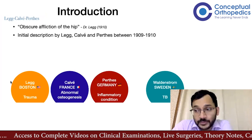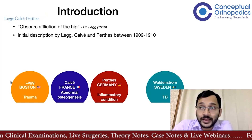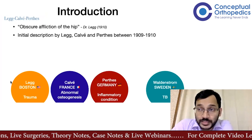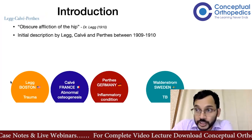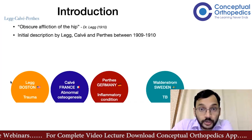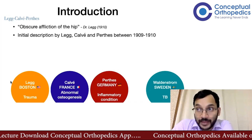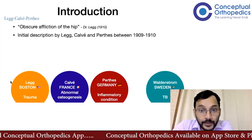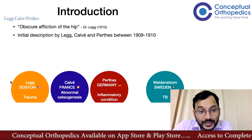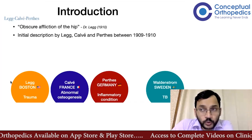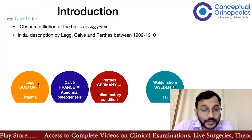They described this condition as an obscure affliction of the hip. At the time, the only two conditions definitely diagnosed in pediatric patients were tuberculosis of the hip and septic arthritis of the hip. This particular condition mimicked tuberculosis and was being treated as tuberculosis for a very long time. Waldenstrom, in the same time period between 1909 and 1910, described this condition as tuberculosis of the hip, whereas Legg, Calvé, and Perthes defined it as due to trivial trauma, abnormal osteogenesis, or an inflammatory condition — which to date we do not have a clear-cut answer to.